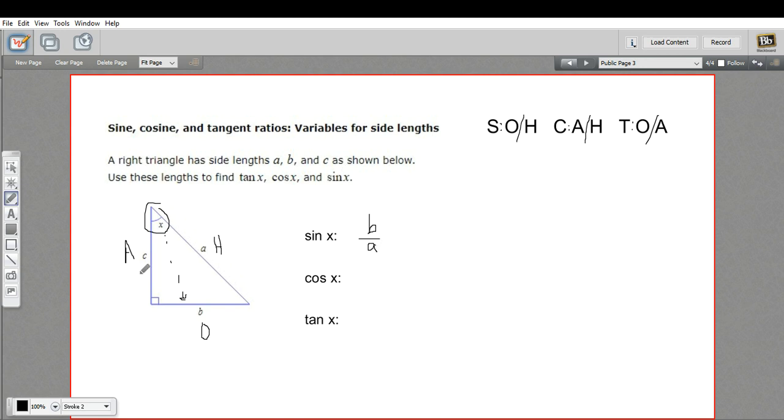How about the cosine of x? That's adjacent over hypotenuse. The adjacent is c, so cosine x equals c over a.